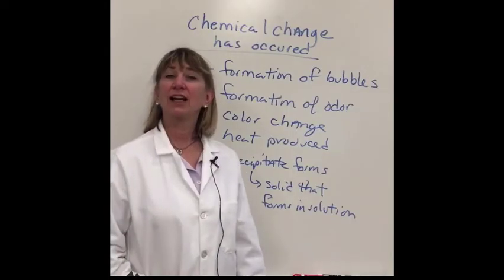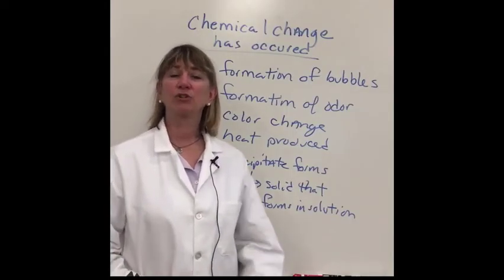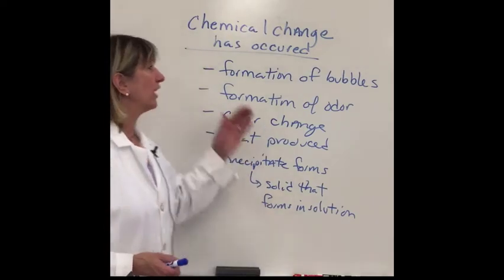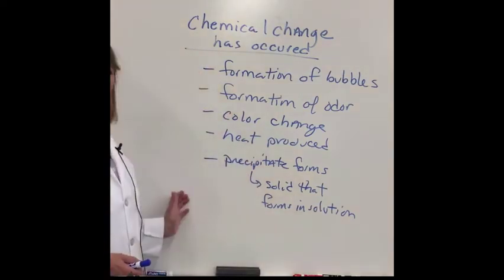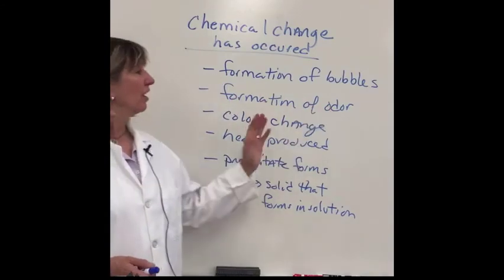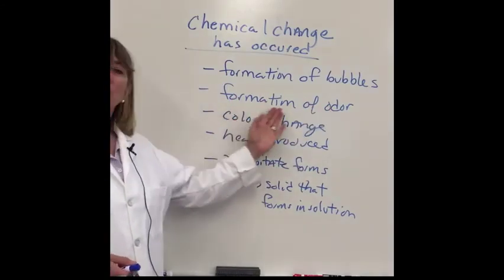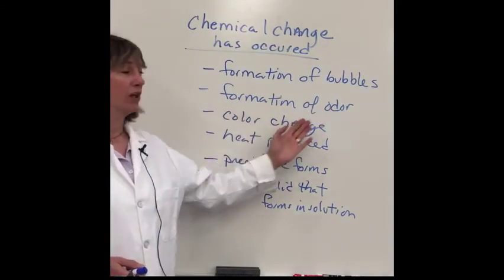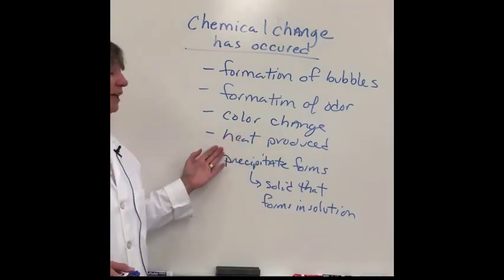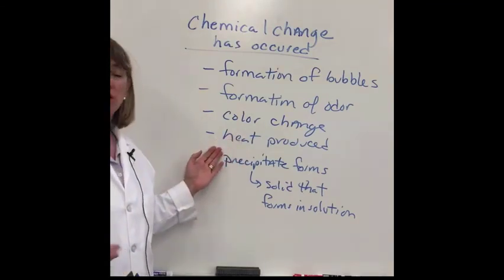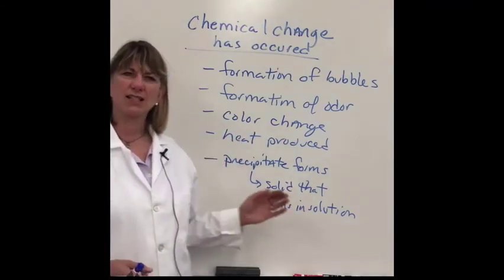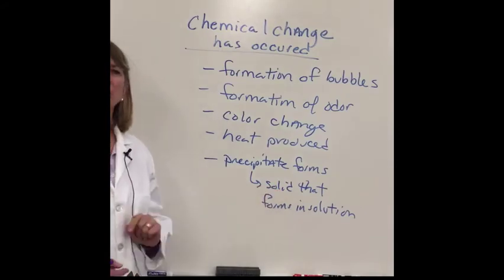This week's lab we're doing the idea of a compound using chemical changes. Some of the chemical changes that we're going to be looking at are the formation of bubbles, formation of odor, a color change, heat can be produced, and a precipitate can form. A precipitate is a solid that forms in solution.